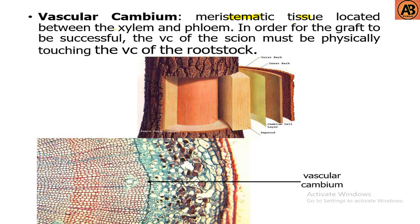The vascular cambium is meristematic tissue located between the xylem and phloem. In order for the graft to be successful, the vascular cambium of the scion must be physically touching the vascular cambium of the rootstock. Both vascular cambia must be in contact.